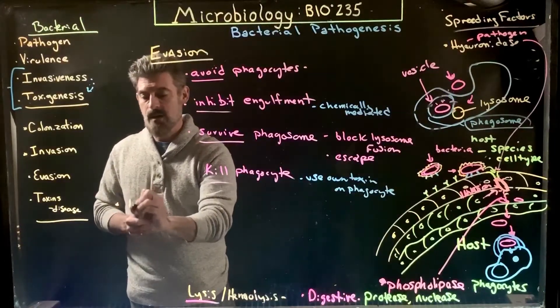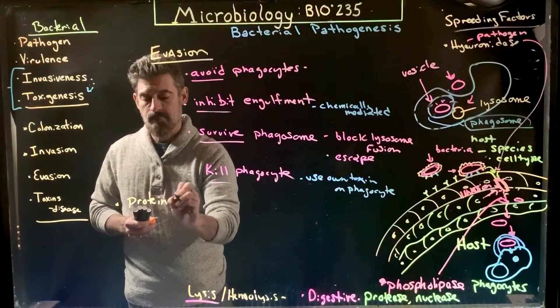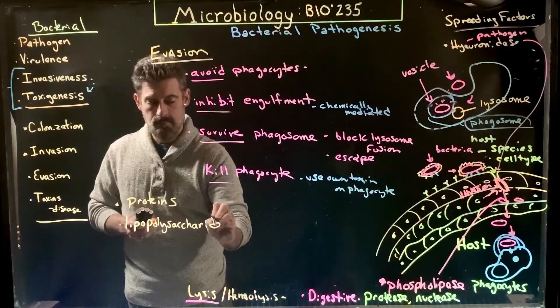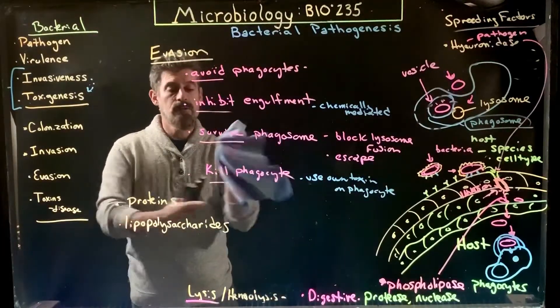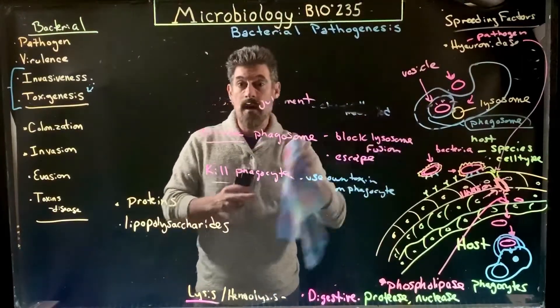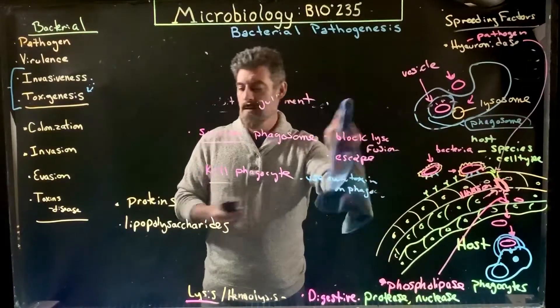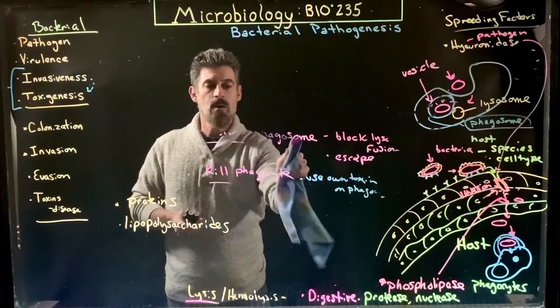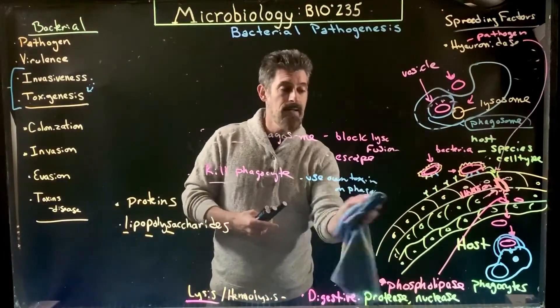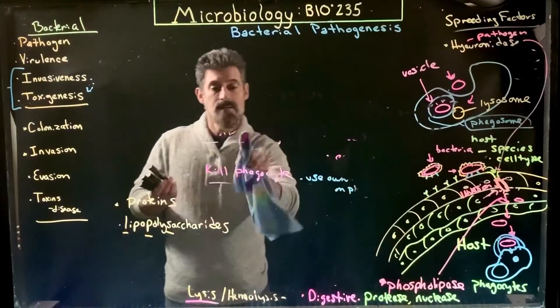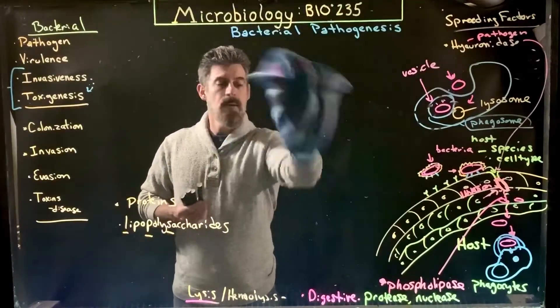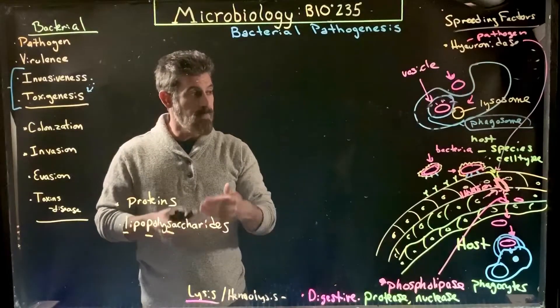In that line, not just talking about killing the phagocytes but in general any host cell or any tissue that they're in, we get into this toxigenesis part. So the toxins—there are going to be two major classes of toxins. We're going to have proteins and lipopolysaccharides. In general, we categorize the proteins into a group that we call exotoxins, and we typically categorize the lipopolysaccharides—if you remember this from the gram-negative cell wall, we call this the LPS, lipopolysaccharide LPS layer on the outside of the gram-negative bacteria—as typically a type of toxin. So we put them into one of these two categories based on their chemical makeup.